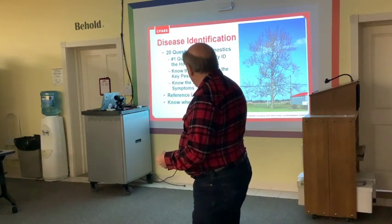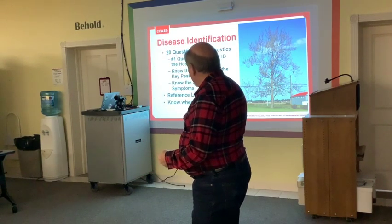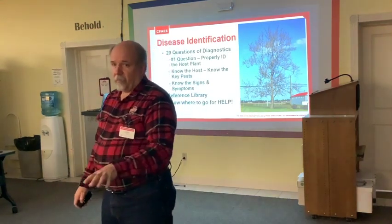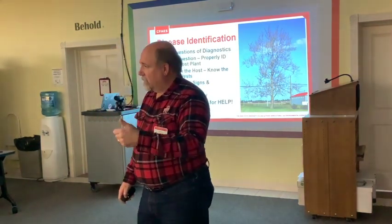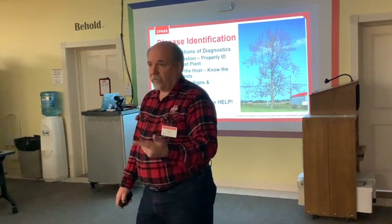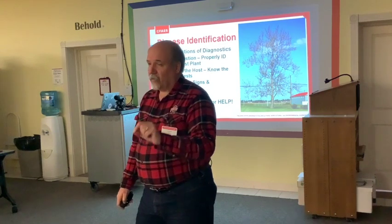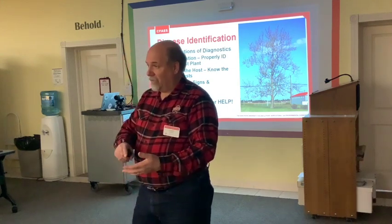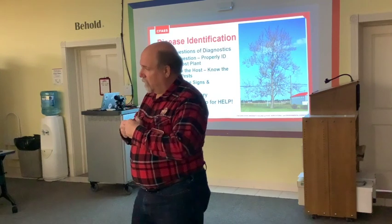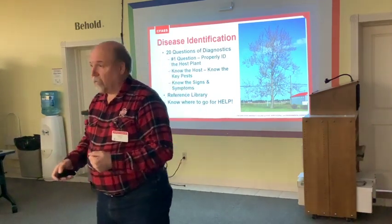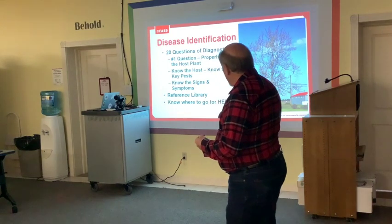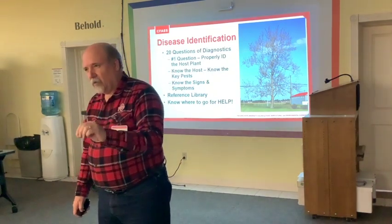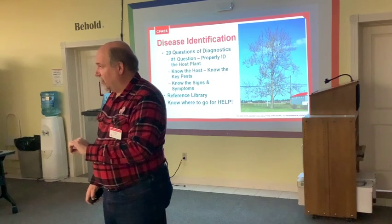Second, once you know the host plant, you can easily find out what are the most common and key pests of that plant — whether insect or disease pests. Lists exist for particular host species that say: the most common problems with this plant are these. That gives you a head start. Also, by knowing what that plant is, you may know what are the unusual appearances of that plant. There are many plant selections in ornamental landscapes that appear to have something wrong with them — such as golden arborvitae that is gold in color when you'd expect an evergreen to be green.